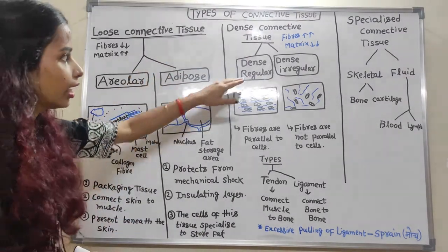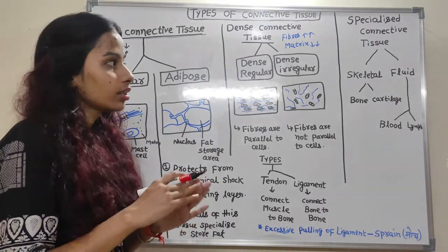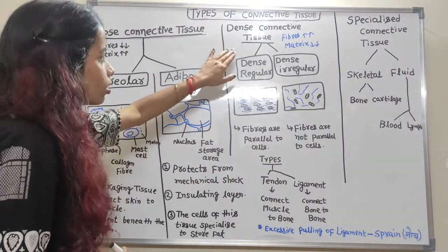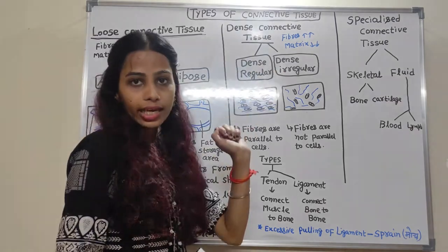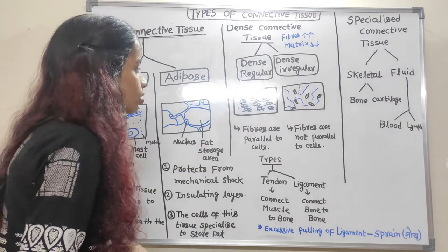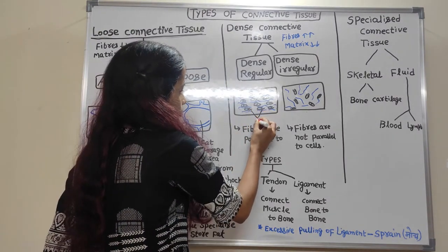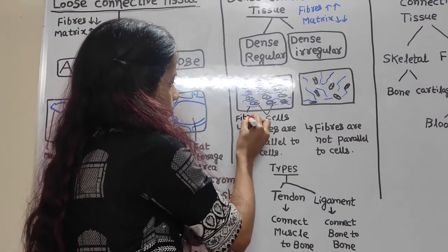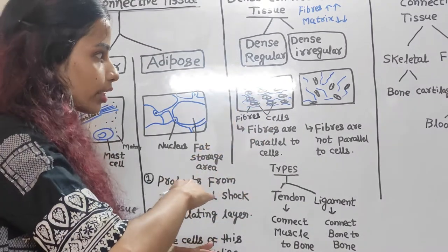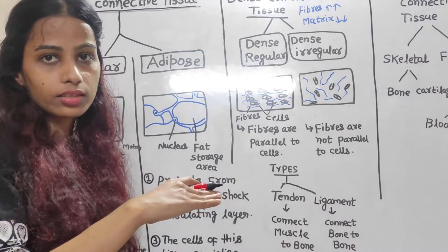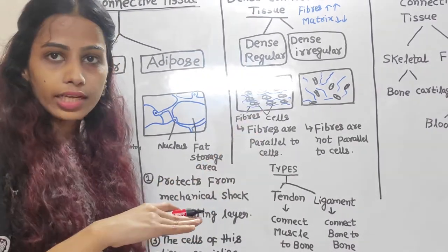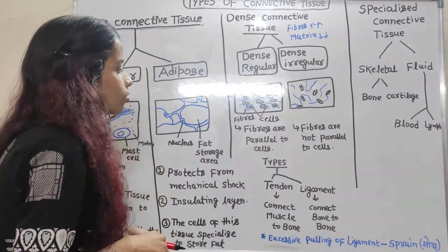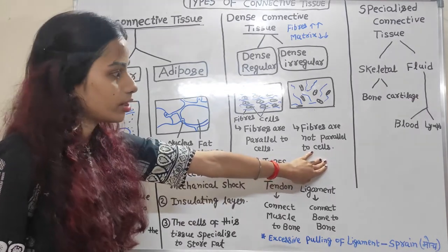Next is dense connective tissue. Dense means fibers are more and matrix is less — opposite to loose connective tissue. It is divided into dense regular and dense irregular. In dense regular, fibers and cells are present in a regular manner and fibers are parallel to cells. In dense irregular, fibers and cells are present in an irregular manner and fibers are not parallel to cells.